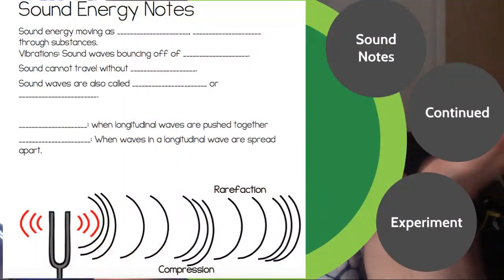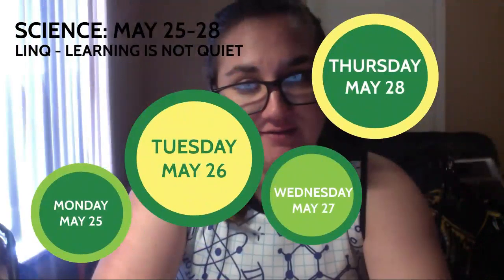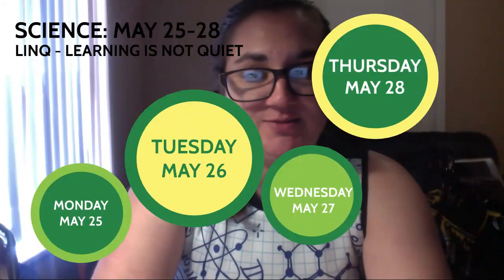Today we're going to do sound energy notes, but before we get into that, I want to review everything just to make sure we're all on the same page and that we've got this clear as day in our heads. So there are two things in the universe — only two things — and neither of those things can be created or destroyed. They can only change form.